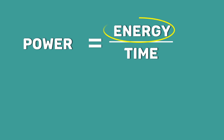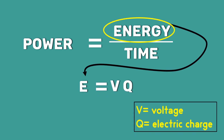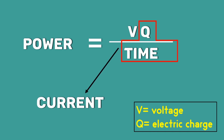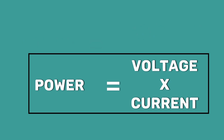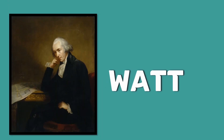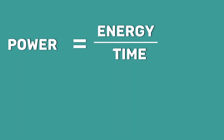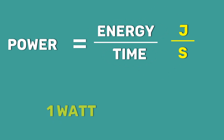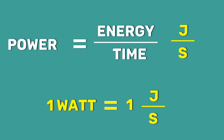We know that energy is voltage times electric charge. Therefore, the power equation can also be written as Vq divided by time. But the electric charge divided by time gives current. This means electric power is equal to voltage times current. The SI unit of power is Watt. It is named after the Scottish engineer James Watt. Since power is energy divided by time, the power can also be expressed as Joule per second. One Watt is equal to one Joule per second.